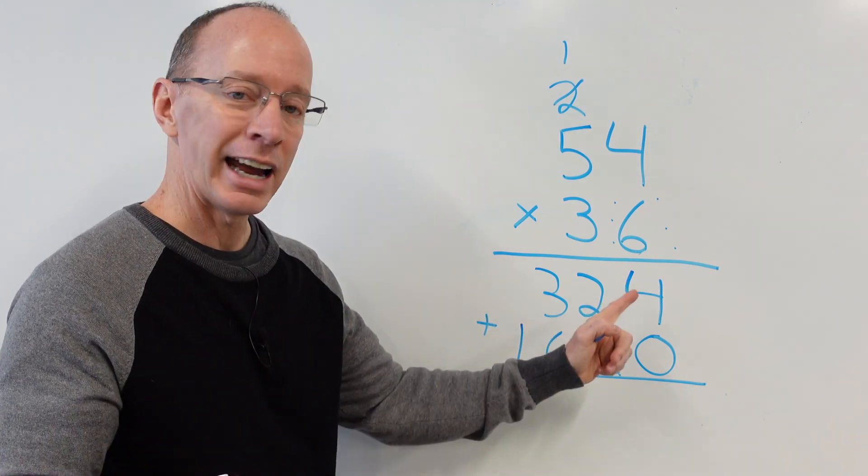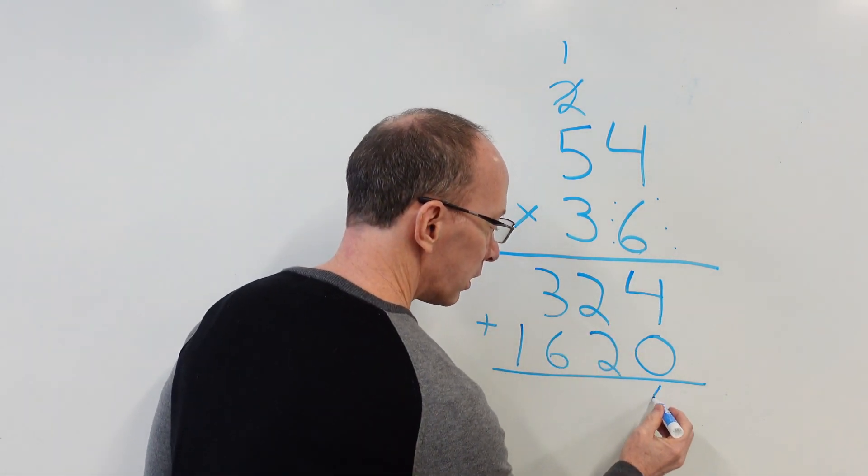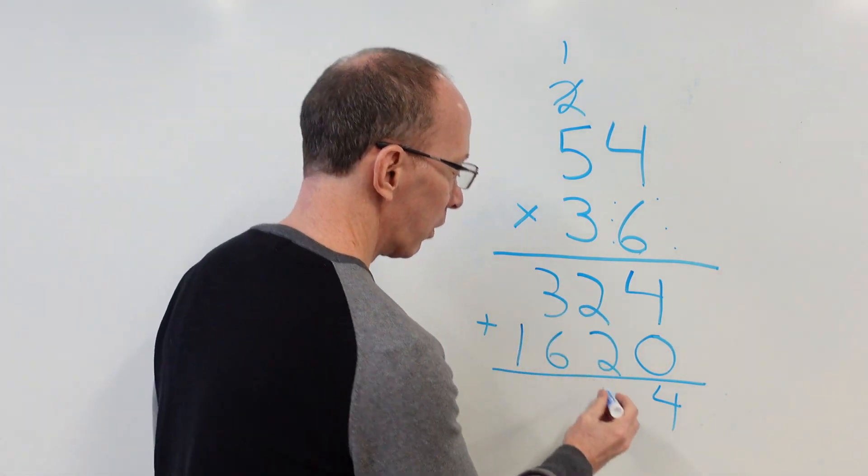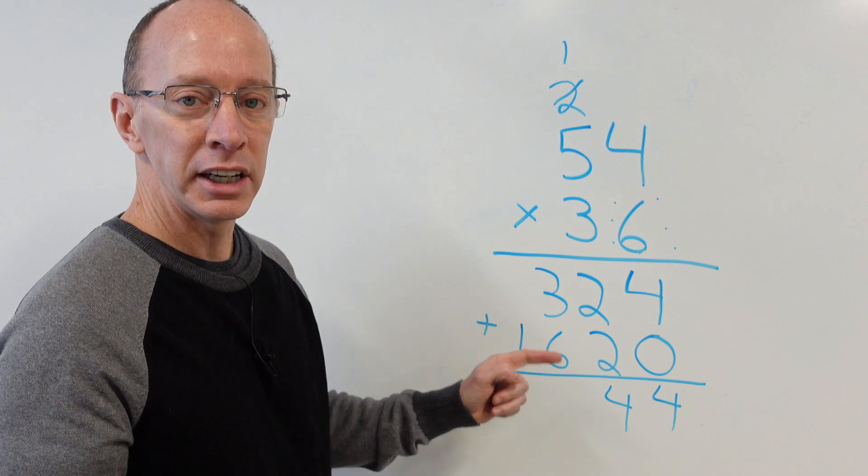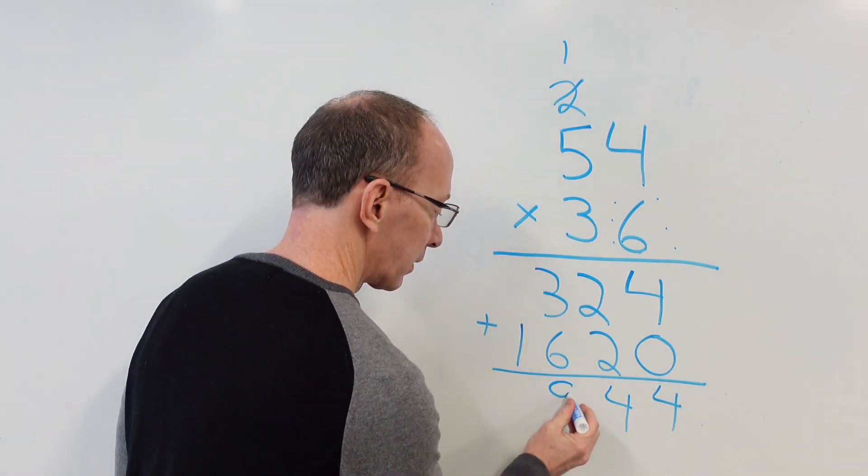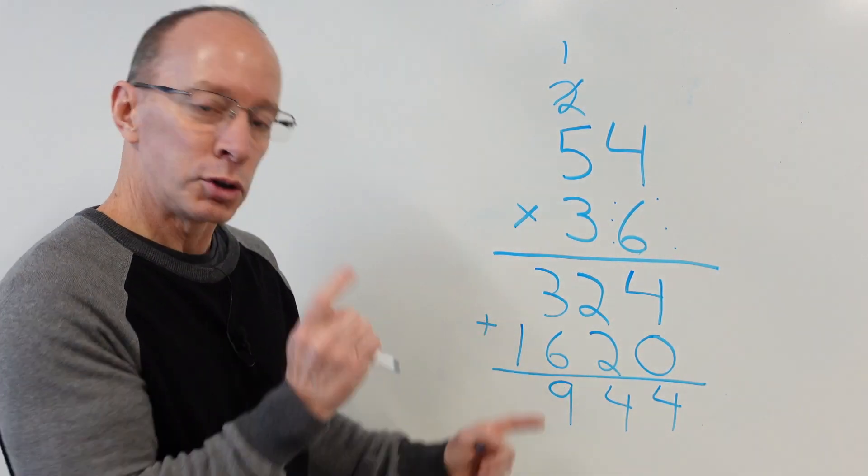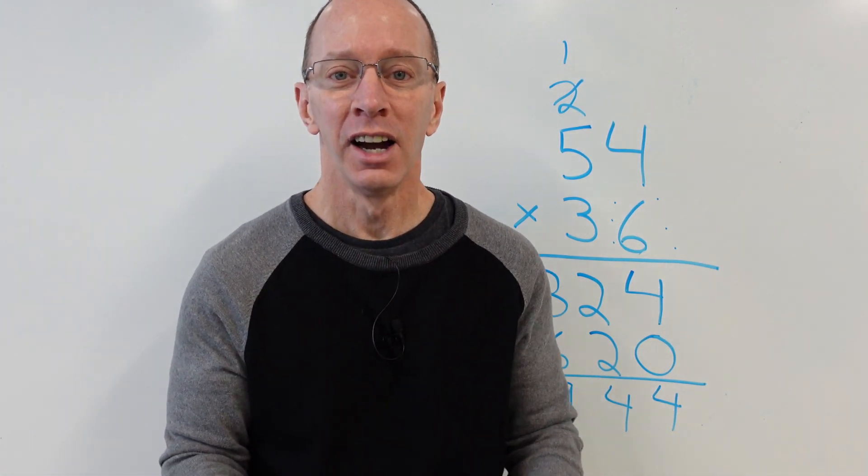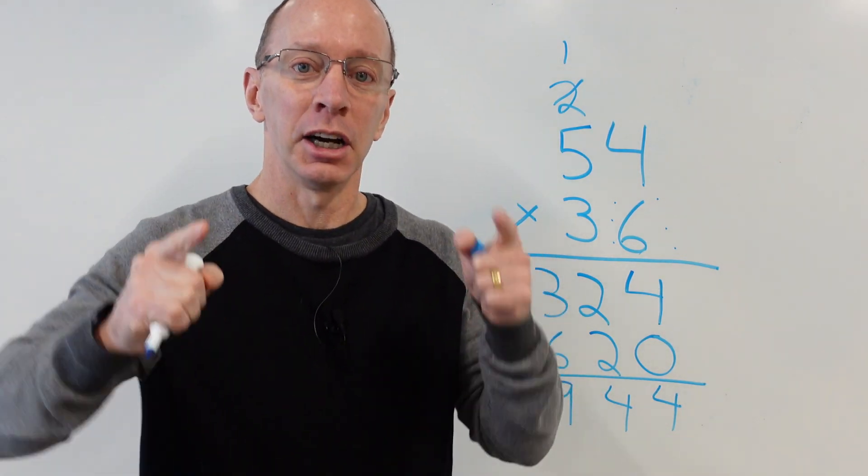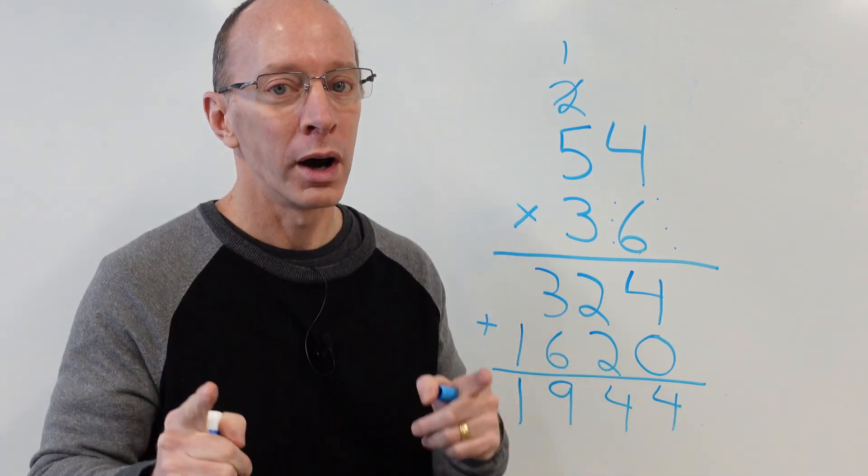Ready to go? Let's do it. Add the ones. Four. Add the tens. Four. Add the hundreds. Six plus three is nine. Drop the one. Right here. Oh, you guys are becoming math ninja pros. Are you ready to do one more? Yeah. Let's do it. Here we go.